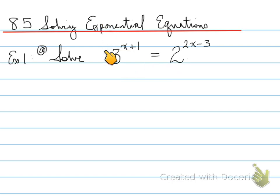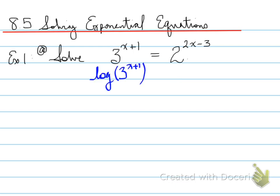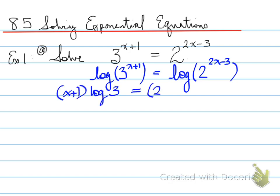When we're solving exponential equations and we have two powers equal to each other with different bases, we want to take the log of both sides. So we take the log of the left side equal to the log of the right side, using log base 10. Once we do that, we can use the power law of logarithms to take the exponent and bring it to the front. That results in the following line, where the exponent has moved to the front.